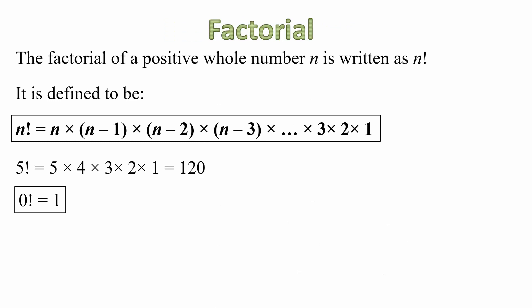And the first thing we have to know is a definition, a very important one, which is called the factorial. Basically, the factorial of a number, and it must be a positive whole number, which we will refer to as the letter n, is written as n with the exclamation mark at the end, but we don't say that. We actually say n factorial. And we define it to be n factorial equals n times (n-1) times (n-2) times (n-3) and so on, all the way down to 3 times 2 times 1.